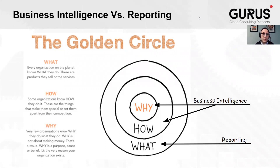There's a famous author and marketer, Simon Sinek, who coined the Golden Circle Framework. This famous framework states: every organization knows what they do, some understand how they do it, very few understand why they do what they do.